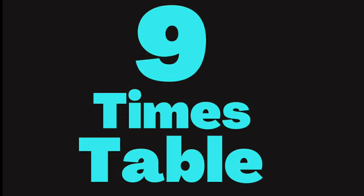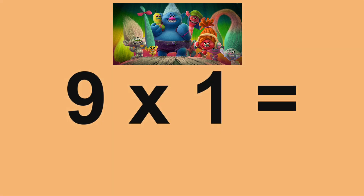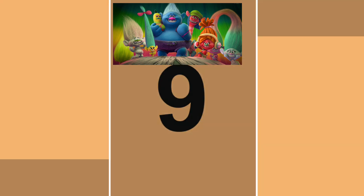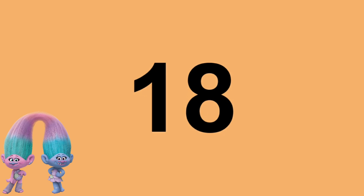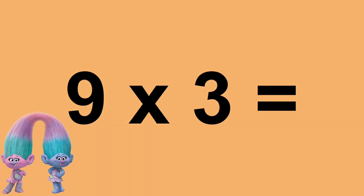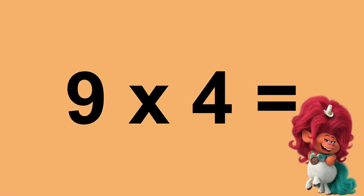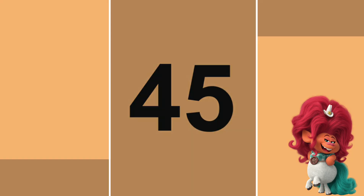Nine times zero equals zero. Nine times one equals nine. Nine times two equals eighteen. Nine times three equals twenty-seven. Nine times four equals thirty-six. Nine times five equals forty-five.